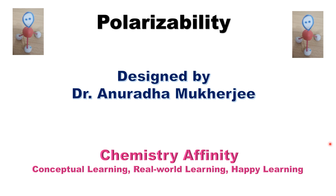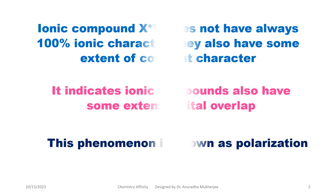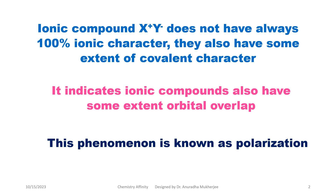In this video, I am going to explain polarizability. We know ionic compounds form due to electrostatic interaction between cations and anions. There is no orbital overlap or electron sharing in ionic compounds. But it doesn't mean that an ionic compound always contains 100% ionic character — ionic compounds also have covalent character. That means ionic compounds also have some extent of orbital overlap. This phenomenon is known as polarization.